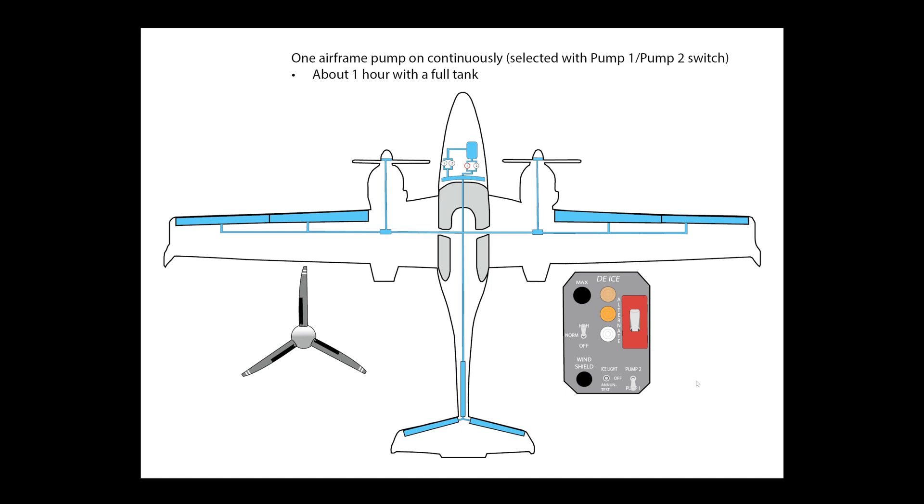If the norm setting is not enough, then you can set the switch to the high setting. In that case, the white light and this first orange light are both illuminated now. With the high setting, just one of the pumps is running, but it's running continuously, just runs constantly distributing that fluid. Which pump it is that is going to be the one that runs is selected with this pump one, pump two switch down here. This also has a function for the windshield de-ice, but in this case, it chooses which of the pumps is going to be the active one when you have set this to high. So this is in high. In this case, pump one is selected, so pump one just runs continuously as long as you have it set to high.